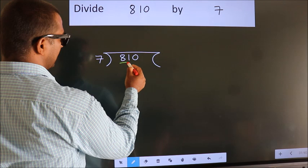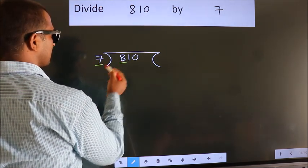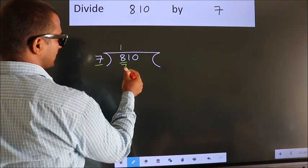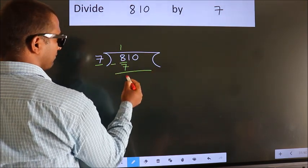Here we have 8, here 7. A number close to 8 in 7 table is 7 once 7. Now we should subtract. We get 1.